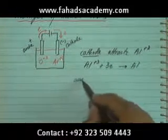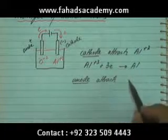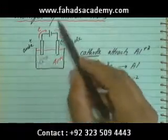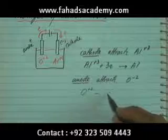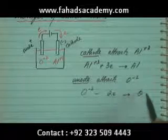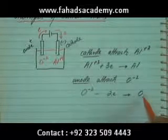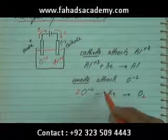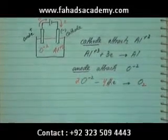At the anode, the positive terminal attracts O²⁻. The battery takes electrons away from the anode, so O²⁻ loses two electrons to form a neutral oxygen atom. However, oxygen is also diatomic and never exists as a single atom. To form O₂, two O²⁻ ions are needed, and together they lose four electrons total.